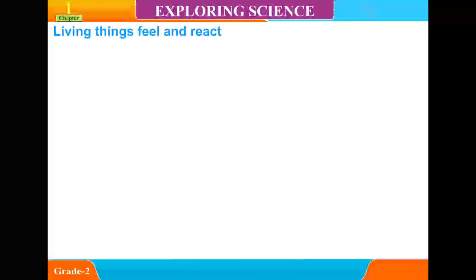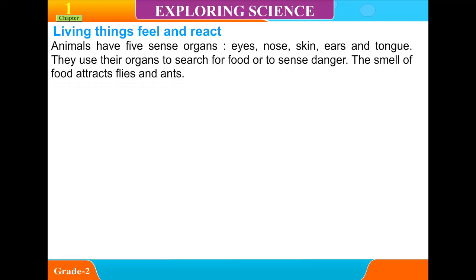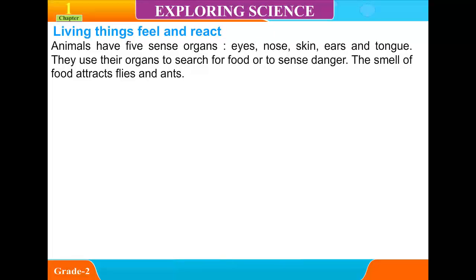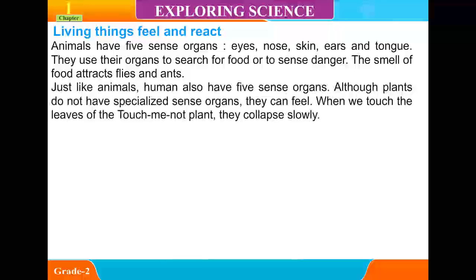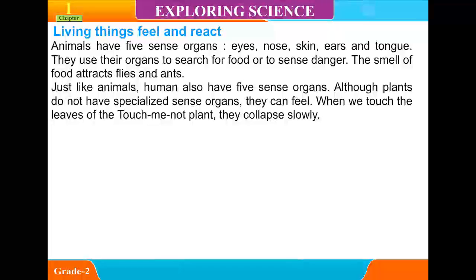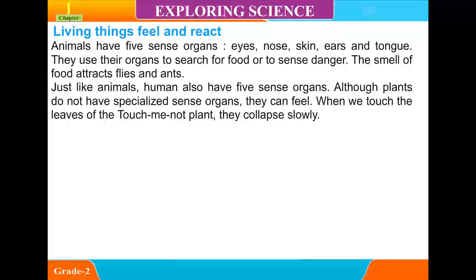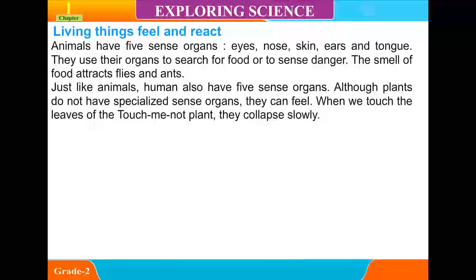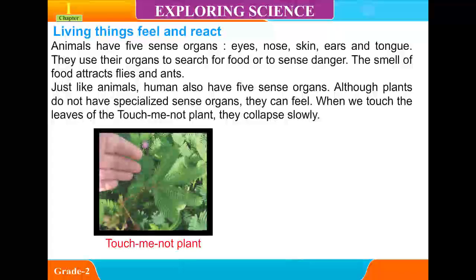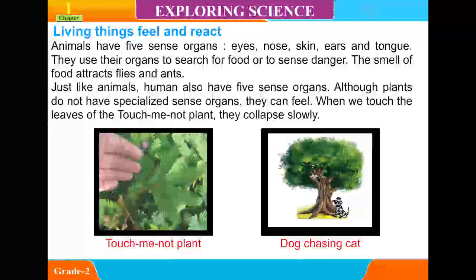Living things feel and react. Animals have five sense organs: eyes, nose, skin, ears and tongue. They use these organs to search for food or to sense danger. The smell of food attracts flies and ants. Just like animals, human beings also have five sense organs. Although plants do not have specialized sense organs, they can react. When we touch the leaves of the touch-me-not plant, they collapse slowly.